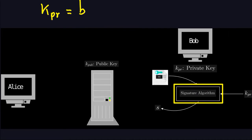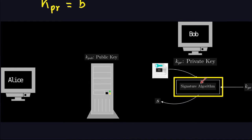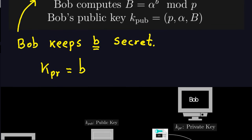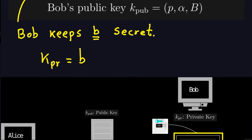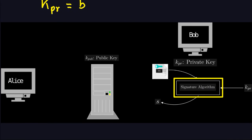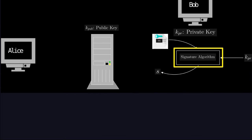In this video I'll describe only the signature algorithm; in the next one we'll talk about the verification algorithm. Bob, who wants to sign the messages, has the private key b and the public key consisting of the three numbers p, alpha, and b. For the signature algorithm, you always need the message and the private key — these are the inputs of the signature algorithm for the ElGamal.